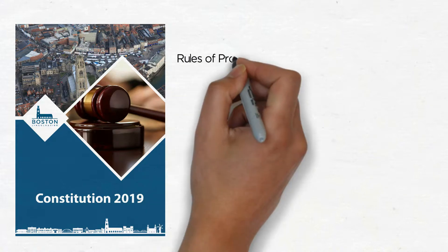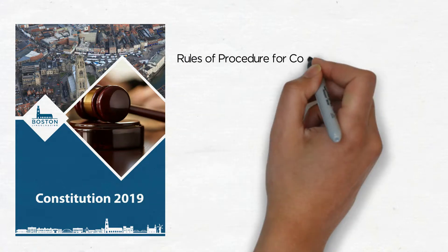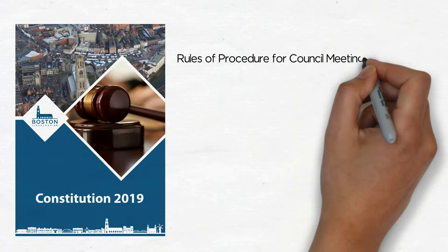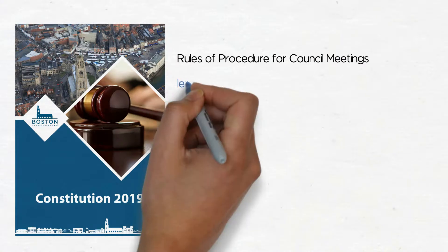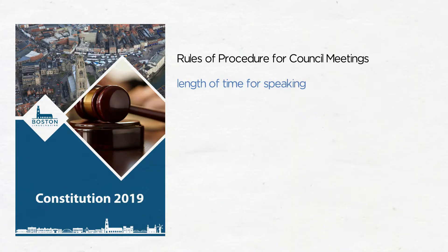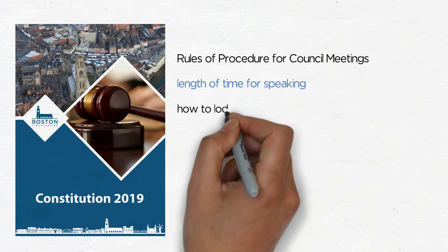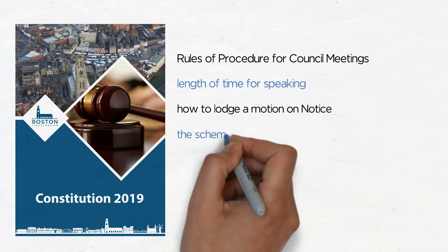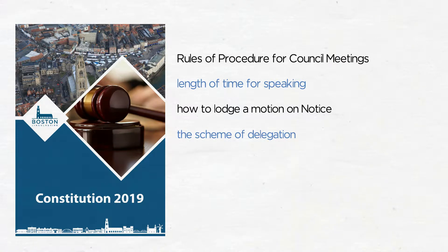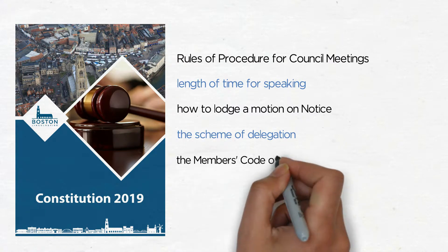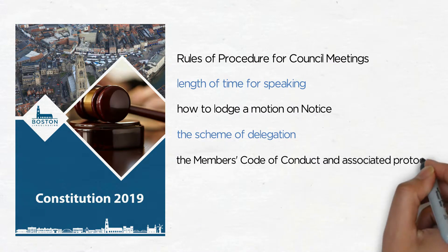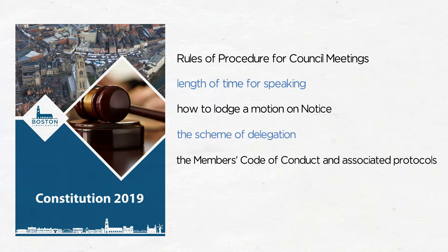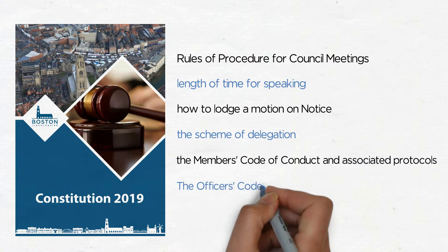The Constitution contains, amongst other things, the rules of procedure for Council meetings — including when the public and members can ask questions, the length of time for speaking, how to lodge a motion on notice, the scheme of delegation, the members' code of conduct and associated protocols, the officers' code of conduct, and many other procedures which must be followed.